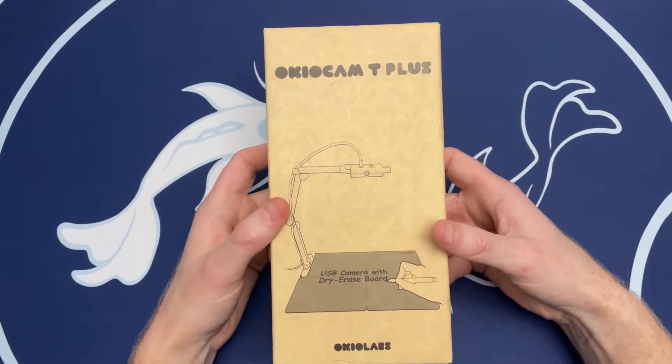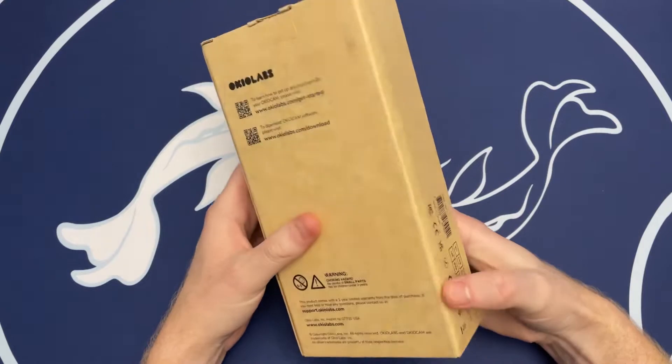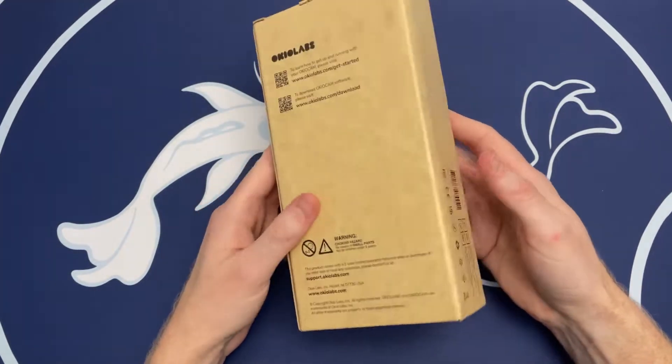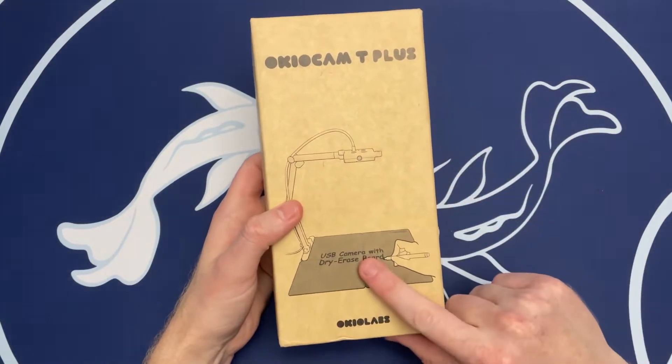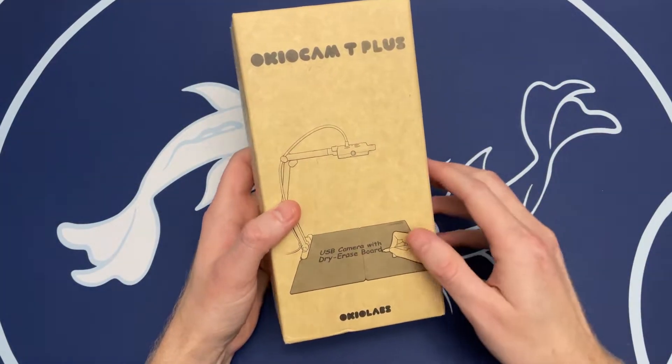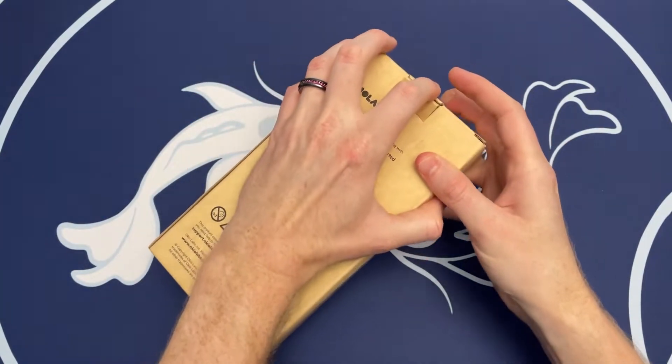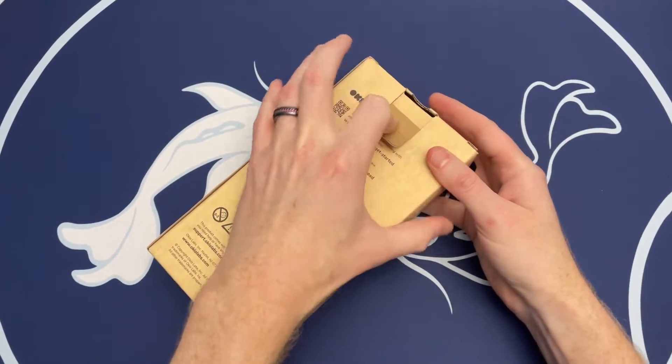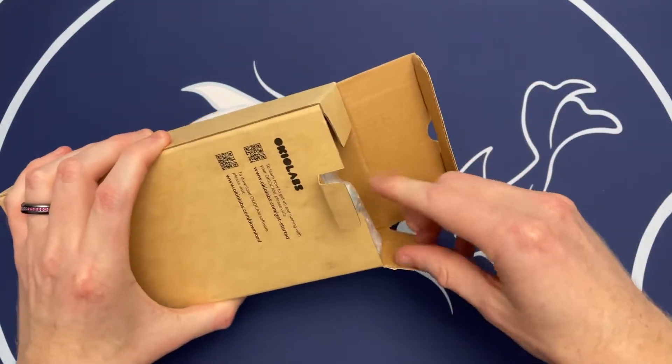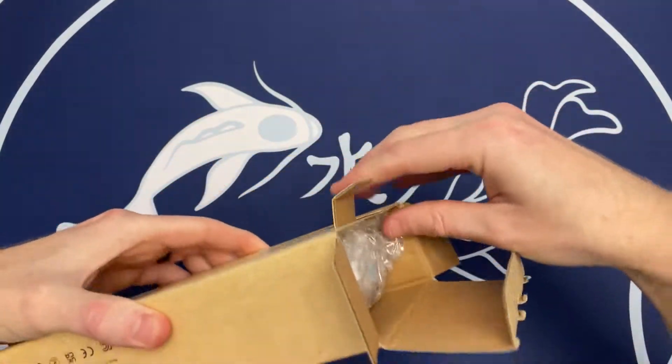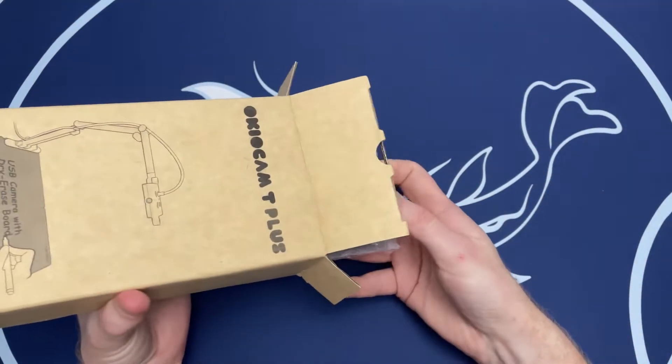So this is actually used more for an educational kind of use case in terms of reading books. But there's a dry erase board built into this as well. So we'll get into the unboxing real quick. This has a 5 megapixel camera and the quality, I believe it's going to be about 2K in terms of quality output. This is 90 bucks. You can pick it up on Amazon. I'll leave the link down in the description.